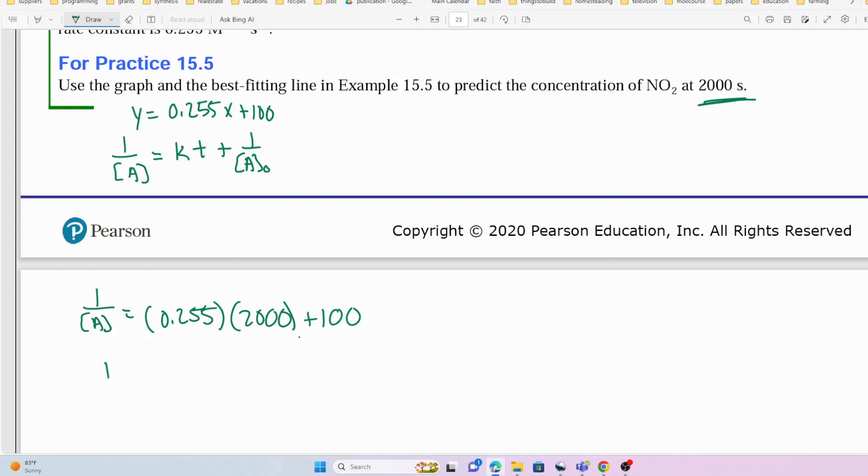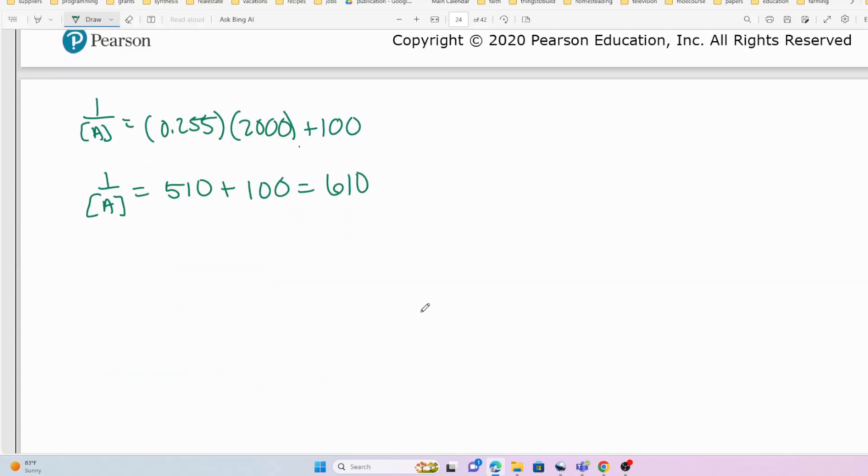And so 1 over the concentration of A is equal to 510 plus 100, which is equal to 610. So at 2000 seconds, the concentration of A would be equal to the inverse of 610.